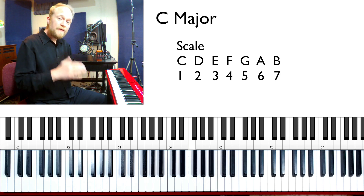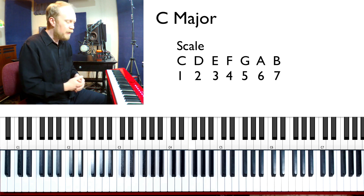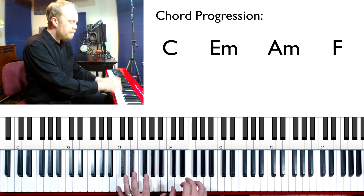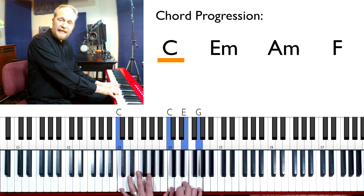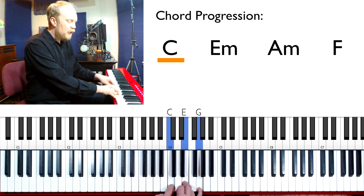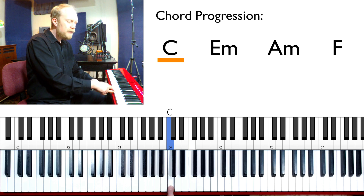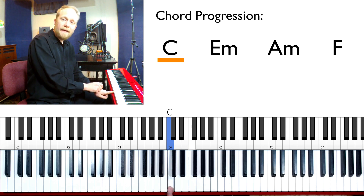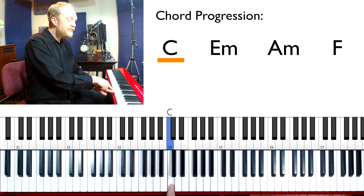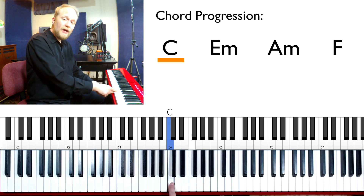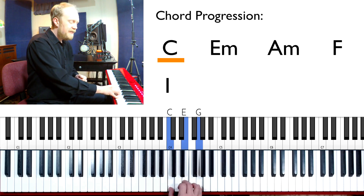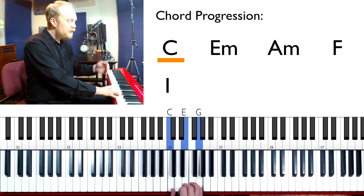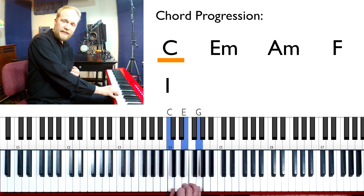Now let's look at those four chords we just played in that chord progression. Let's start with C major — that's the first chord. The root of C major is C, which is the first scale step of the C major scale. So because it's the first note in the scale, we can call a C major chord the one chord in the key of C.